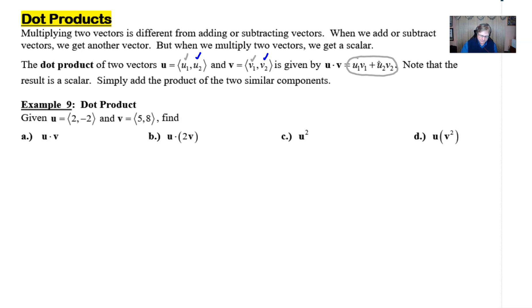Let's take a look at a couple of really simple dot product examples. Here in example nine, vector u is (2, -2) and vector v consists of the components (5, 8). So if in part a we want to find u dot v, we just simply take 2 and multiply it by 5, and then add to that the negative 2 multiplied by the 8. And lo and behold, 10 minus 16 is negative 6. That indeed is a scalar, and that's our dot product.